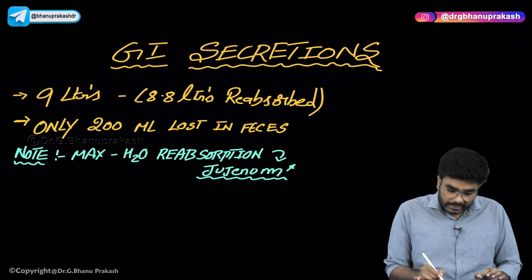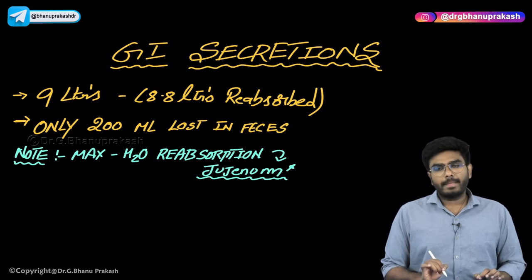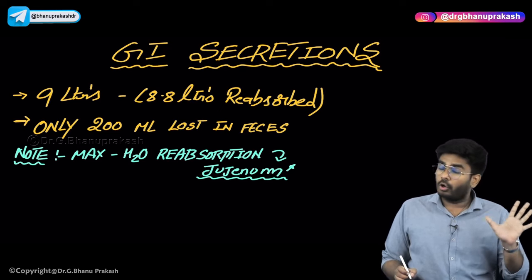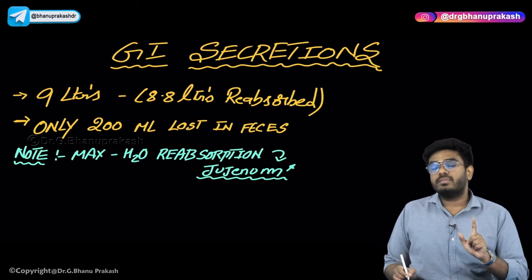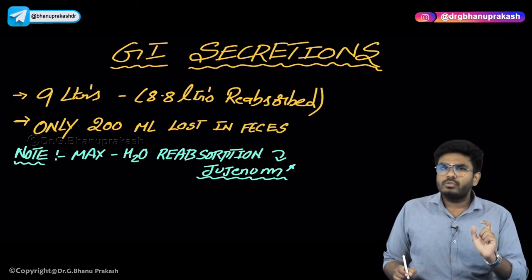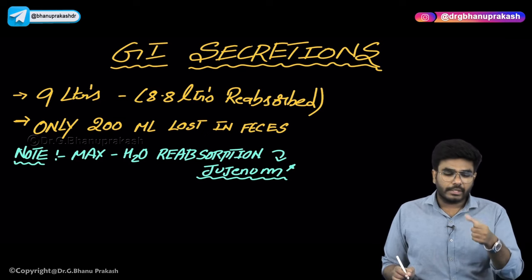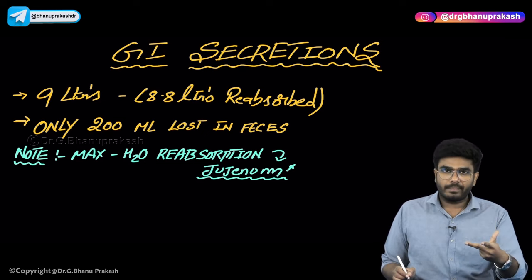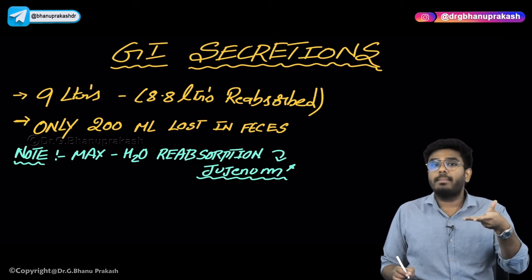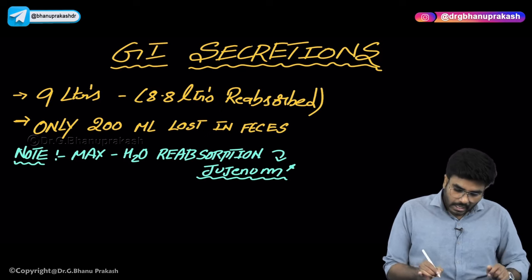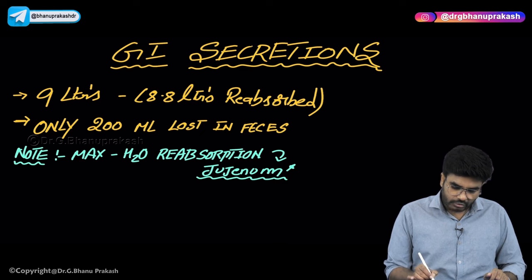Most of the secretions are getting reabsorbed in the part called jejunum. Most students make a mistake here - they think most water is reabsorbed in the colon. No. Most water reabsorption happens in the jejunum. The jejunum is part of the small intestine - duodenum, jejunum, and ileum are the parts of small intestine. Most secretions are reabsorbed in the jejunum.